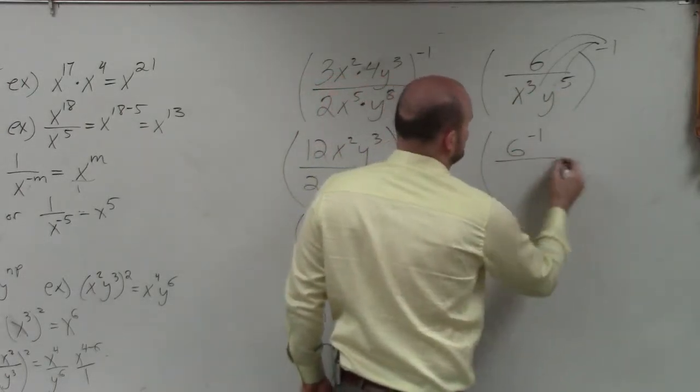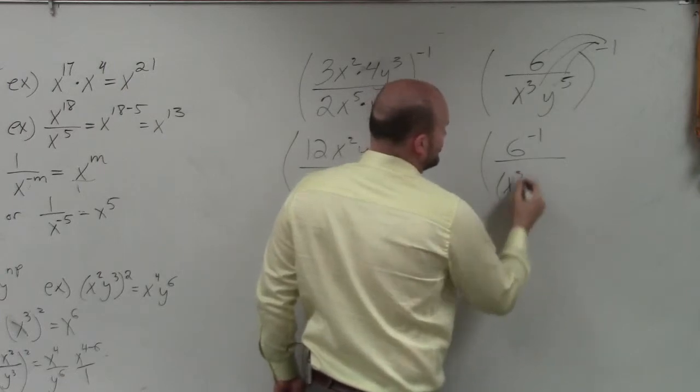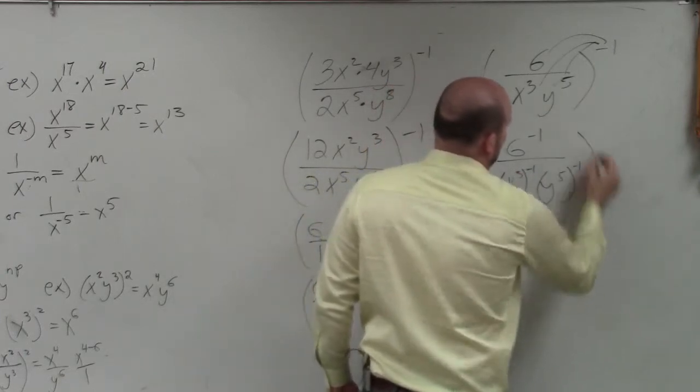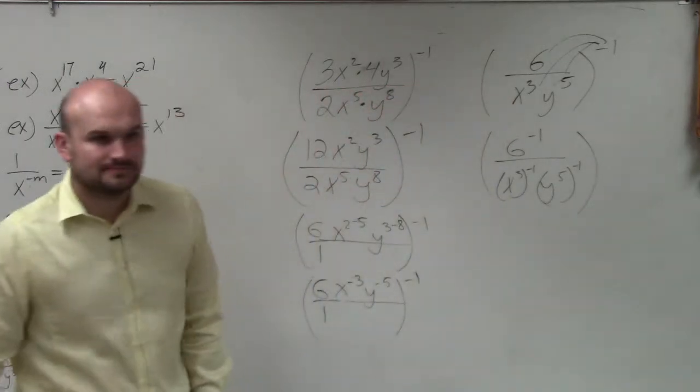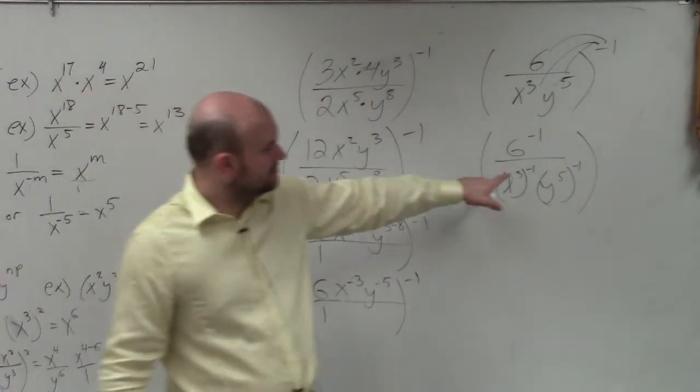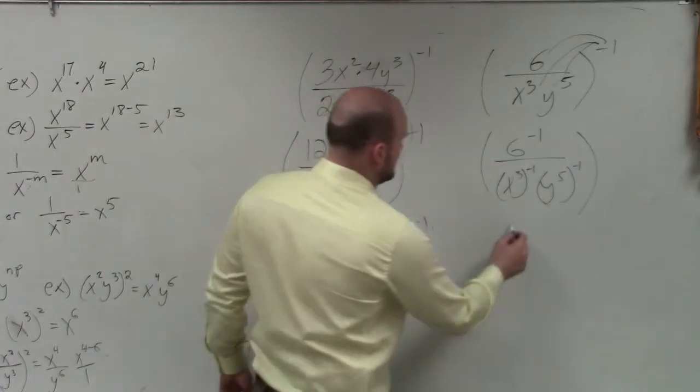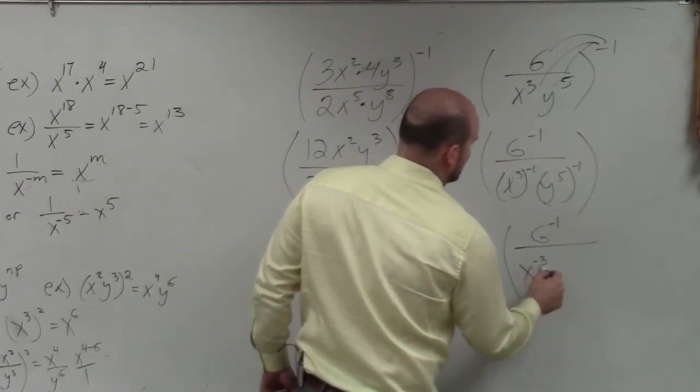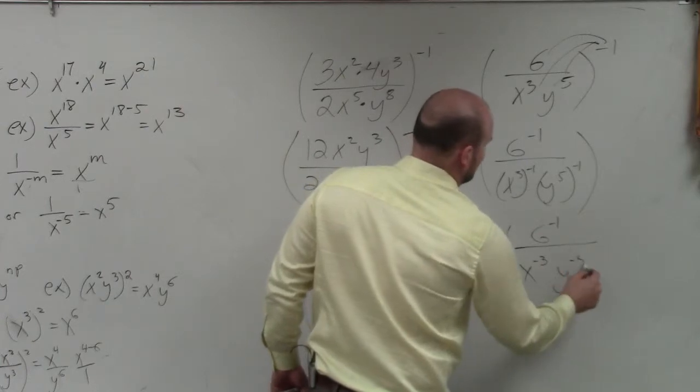So, I have 6 to the negative 1st divided by x cubed to the negative 1st times y to the 5th to the negative 1st. Okay? Now, you can obviously multiply these again. So, you have 6 to the negative 1st divided by x to the negative 3rd, y to the negative 5th.